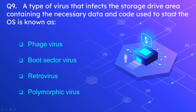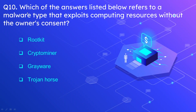Question number 9: A type of virus that infects the storage drive area containing the necessary data and code used to start the OS is known as what? The options are phage virus, boot sector virus, retrovirus, and polymorphic virus. The correct option is boot sector virus. Question number 10: Which of the following refers to a malware type that exploits computing resources without the owner's consent? The options are rootkit, cryptominer, grayware, and trojan horse. The correct option is cryptominer.